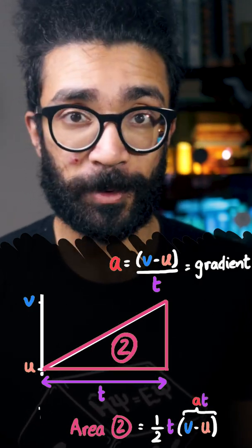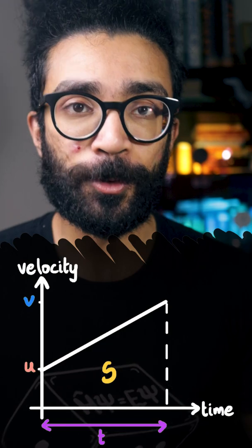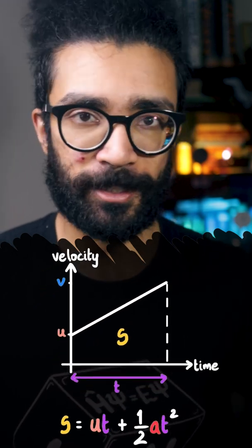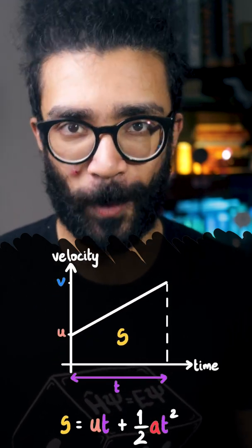Therefore, v minus u is equal to at, at which point we find that the total area under our graph, representing the displacement, is equal to ut plus half at squared.